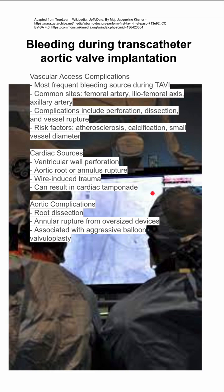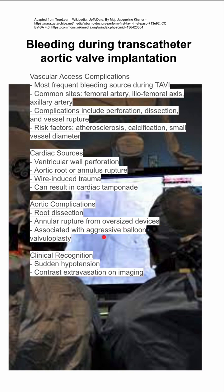There are also aortic complications. You can have aortic root rupture, root dissection, and annulus rupture from oversized devices. This is sometimes associated with aggressive balloon valvuloplasty. The clinical recognition of bleeding is essential.